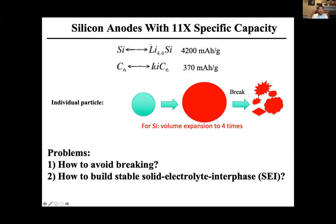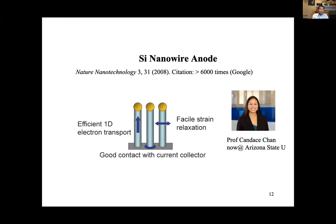Silicon can take a lot of lithium because it alloys with it — one silicon atom can hold up to about four lithium atoms, whereas graphite holds one lithium per six carbons. So the charge storage capacity per unit weight is about 10 times higher for silicon. At the same time, so many lithium ions coming in causes about four times volume expansion, which creates huge mechanical stress and causes the material to break. Not only that, but silicon is very reactive with organic electrolyte, causing decomposition and formation of a solid electrolyte interface, or SEI.